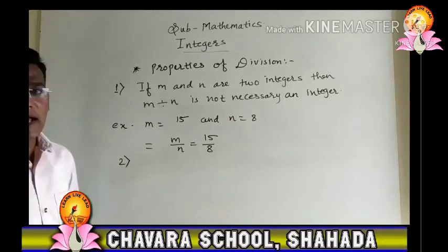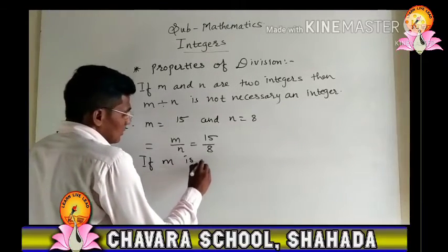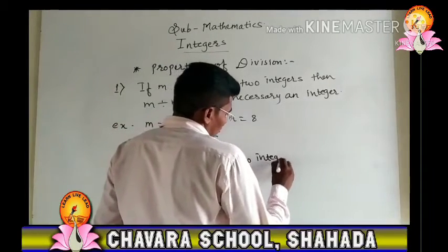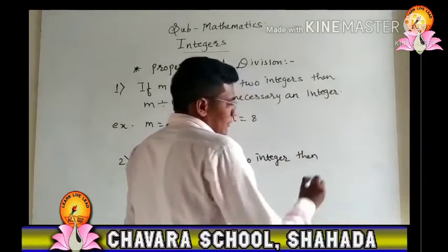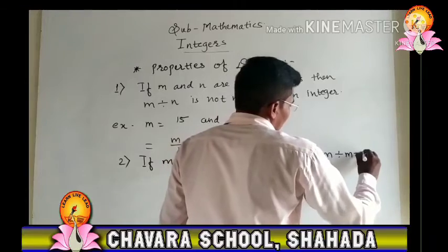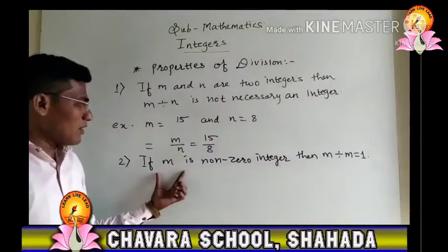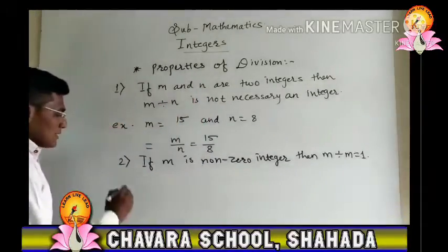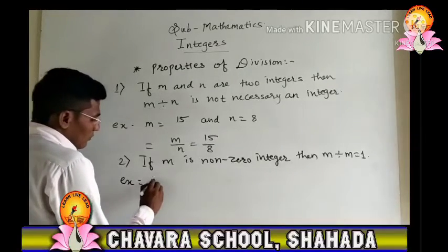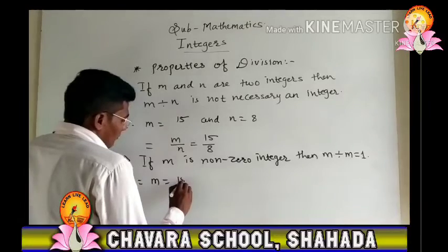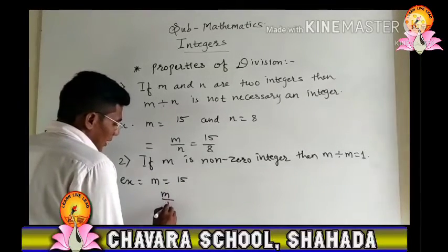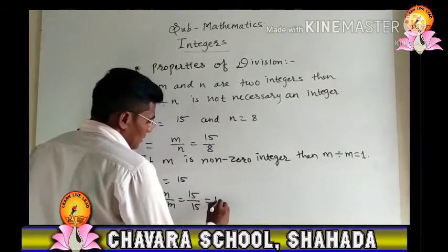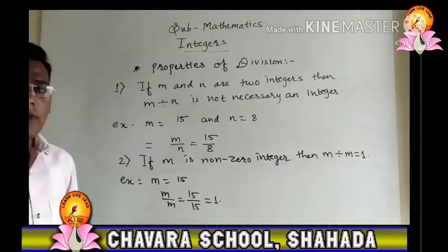The next property is: if m is a non-zero integer, then m divided by itself is always 1. For example, if m equals 15, then 15 divided by 15 is always 1. So this property is also proved.